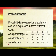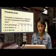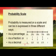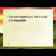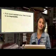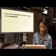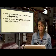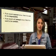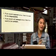Probability is measured on a scale, and we can measure it in three different ways: as a percentage, as a fraction, or as a decimal. If an event cannot occur — there's no chance of it occurring — then we say it is impossible. If an event will always occur, we say that it is certain.